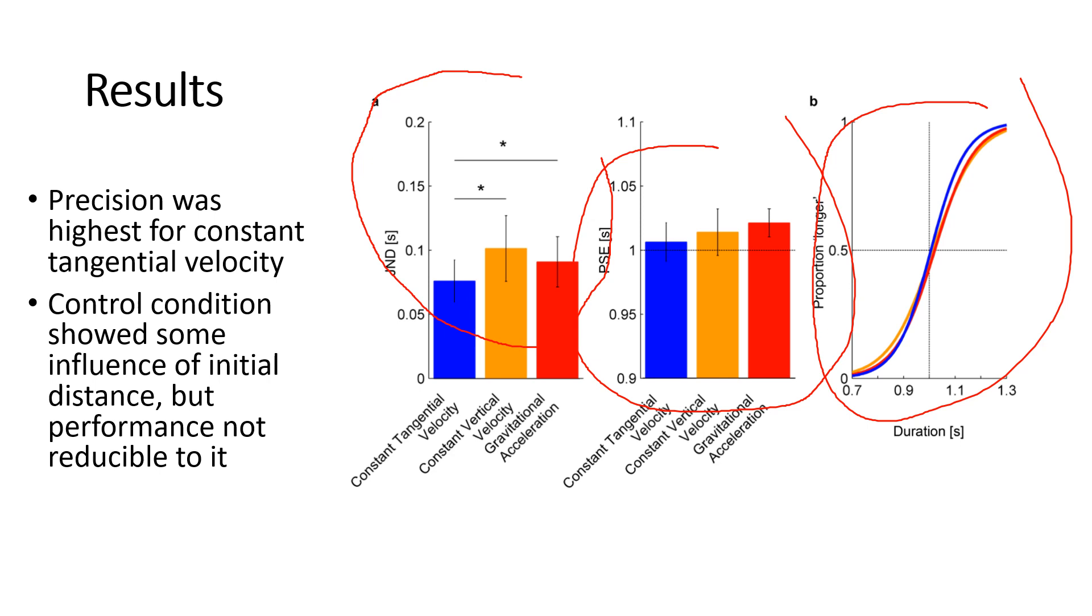What did surprise us was that we found that the JNDs where we had predicted that Earth's gravity would elicit the lowest values corresponding to the highest precision. Here we actually found that the parabolas with the constant tangential velocity elicited lower JNDs than both the gravitational parabolas and the ones with constant vertical velocity.